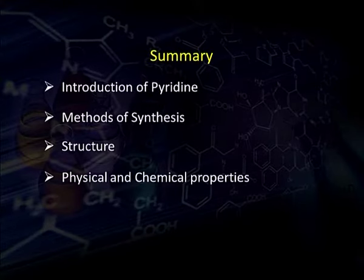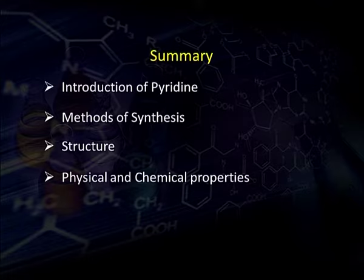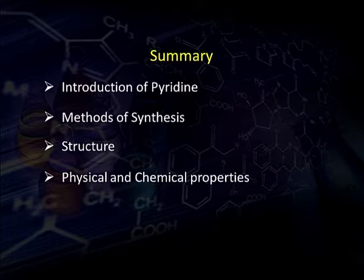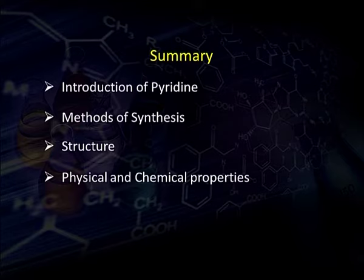So in this episode we studied about pyridine — its structure, how important it is in nature and in what important compounds it is found. We discussed its different methods of preparation and synthesis, including methods for synthesis of its derivatives. We discussed its structure according to molecular orbital theory as well as valence bond theory, and then we discussed its physical as well as chemical properties. In the next episode we will start fused ring compounds — that is, condensed ring heterocyclic compounds — particularly indole, quinoline and isoquinoline, covering their methods of preparation, structures, and physical as well as chemical properties.